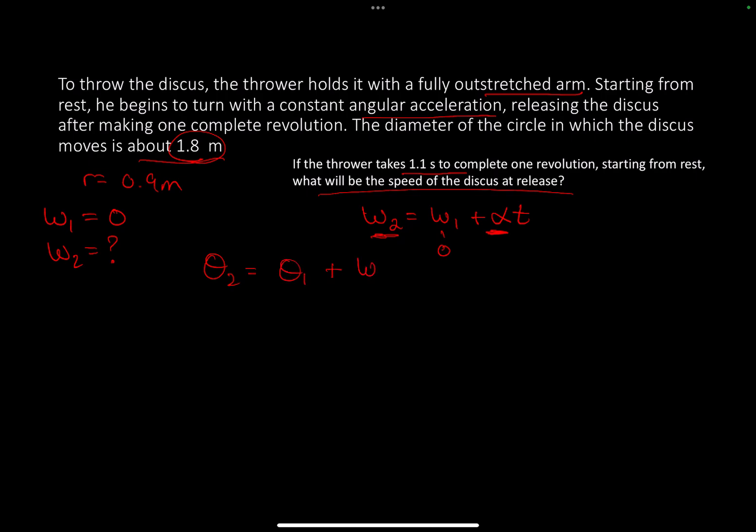Theta 2 equals theta 1 plus w1 t plus alpha t squared. I know everything here except for the angular acceleration. So I'm going to use this, and then plug it back into the first equation.